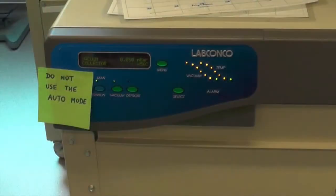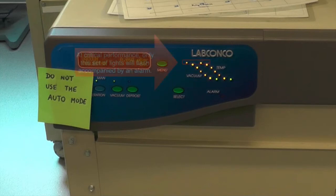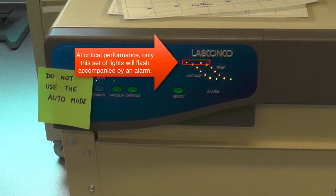The vacuum and temperature LED lights indicate the performance of the vacuum compressor and water collector. At maximum performance, all LED lights will be lit. At critical performance levels, only one set of red LED lights will flash accompanied by an alarm to indicate that the process needs to be restarted from the beginning.